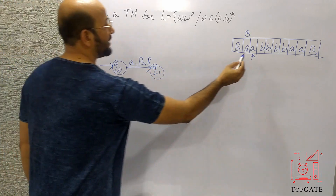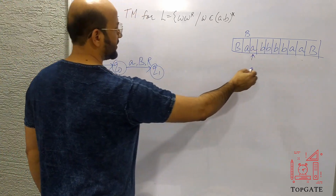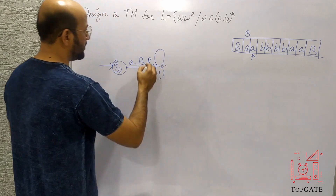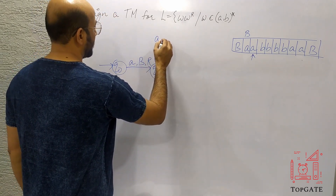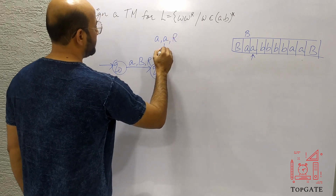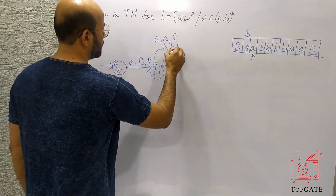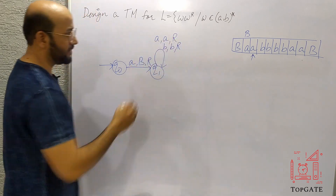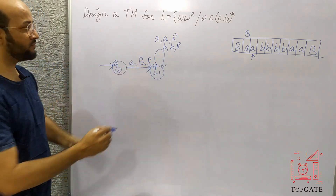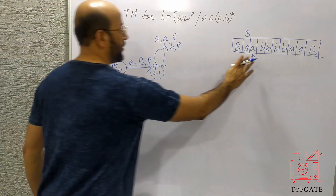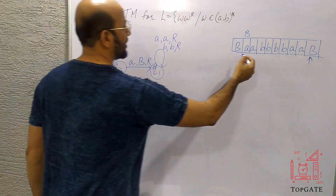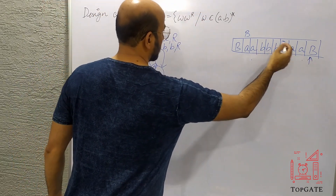At Q1, we have to skip everything. So I will skip all the A's and all the B's using a self loop: if you find A, keep it A and move right; if you find B, keep it B and move right. In this way all the A's and B's will be skipped, and finally the pointer will stop at the last B — the rightmost non-blank element.